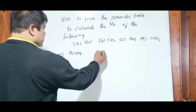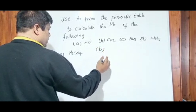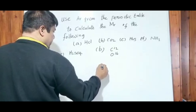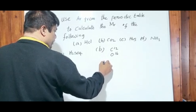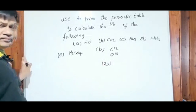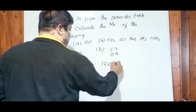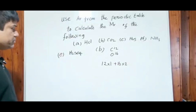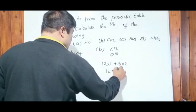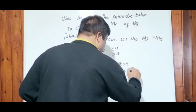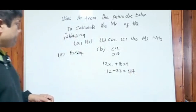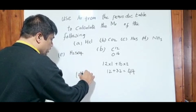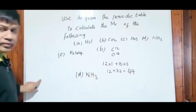Let's do carbon dioxide. The AR of carbon is 12 — I have one carbon. The AR of oxygen is 16 and we have two oxygens. Add them up: 12 plus 32, which equals 44.